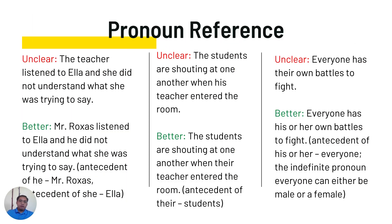Next is pronoun reference. In the first example, it is unclear: 'The teacher listened to Ella and she did not understand what she was trying to say.' It is better to say: 'Mr. Rojas listened to Ella and he did not understand what she was trying to say.' In this case, the antecedent of 'he' is Mr. Rojas, and the antecedent of 'she' is Ella.